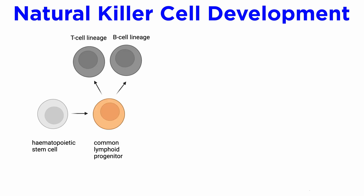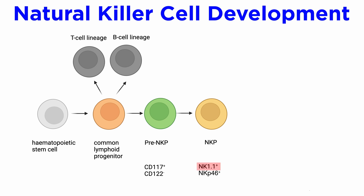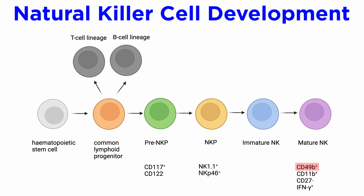NK cells derived from the CLP differentiate into a pre-NKP population, identified by the presence of CD117 and absence of CD122 expression. After becoming an NKP, the cells start expressing the NK cell markers NK1.1 and NKP46. These are considered to be immature NK cells at this stage. With further maturation, they acquire CD49B and CD11B expressions and lose CD27 expression. Fully mature NK cells are able to express cytolytic molecules and cytokines, including interferon gamma.